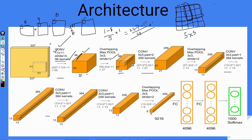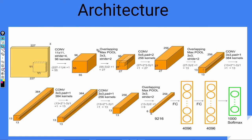This also involves local response normalization, which I'll discuss later. The output then goes to the next convolution layer, where 5x5 filters are applied with padding 2. Padding is used here to get more overlaps as possible.